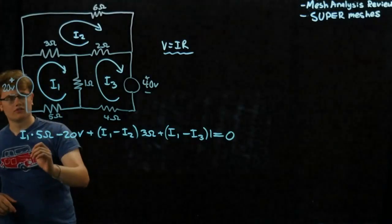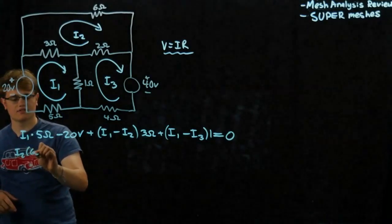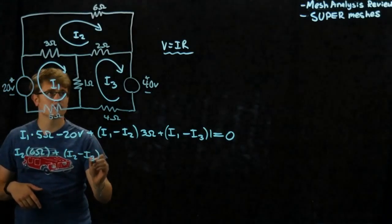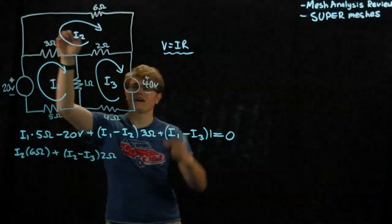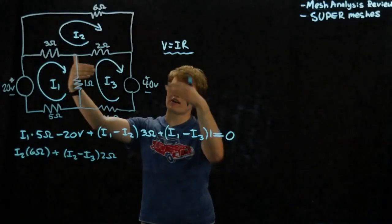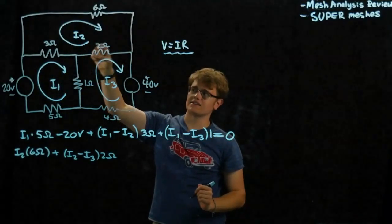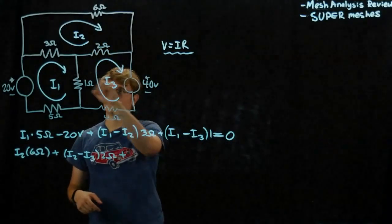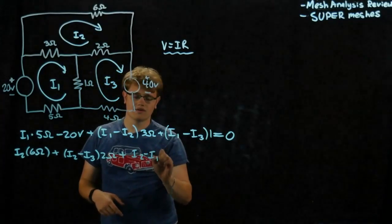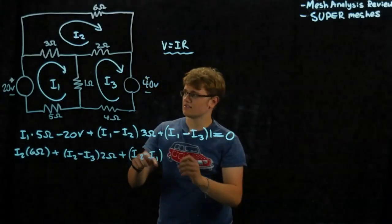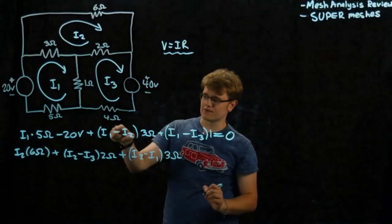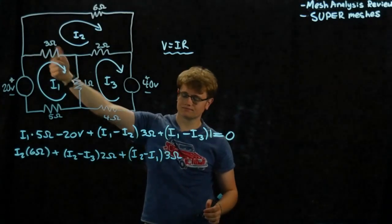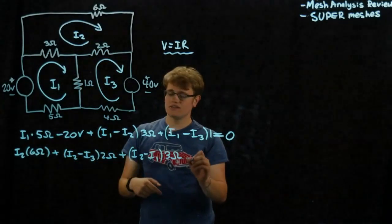For the I2 loop, we get I2 times 6 ohms, plus I2 minus I3 times 2 ohms — because I2 and I3 go in opposite directions through that shared resistor, so one minus the other gives the current through it. Continuing around, we add I2 minus I1 times 3 ohms. That gives us three terms that equal zero.